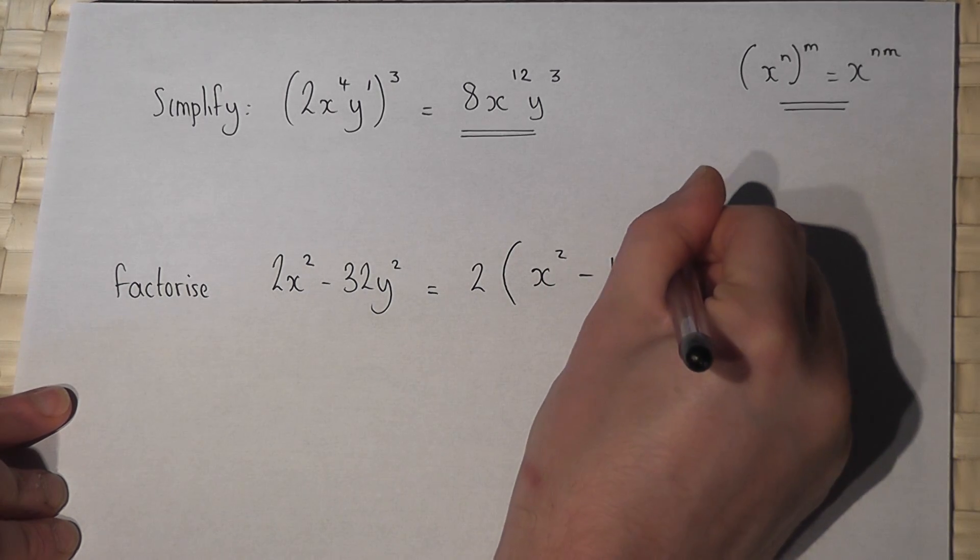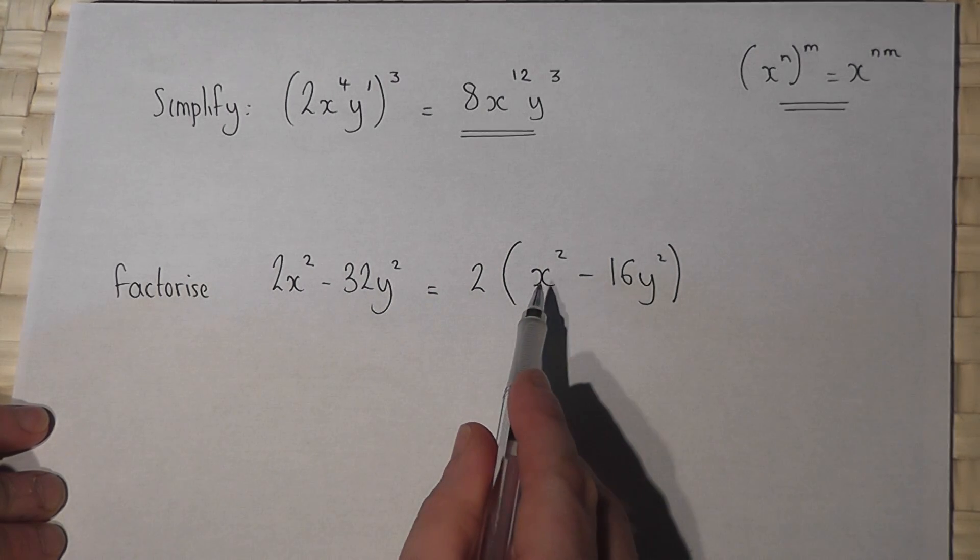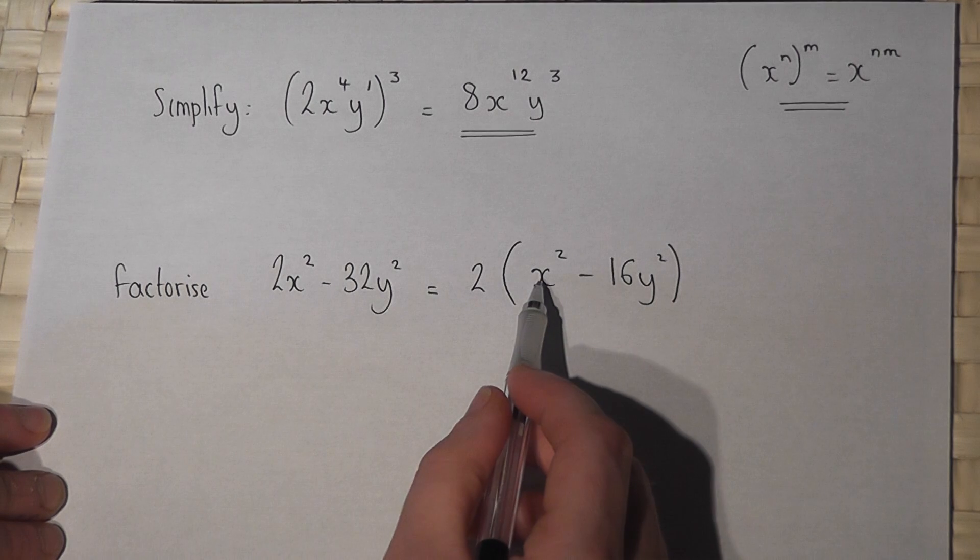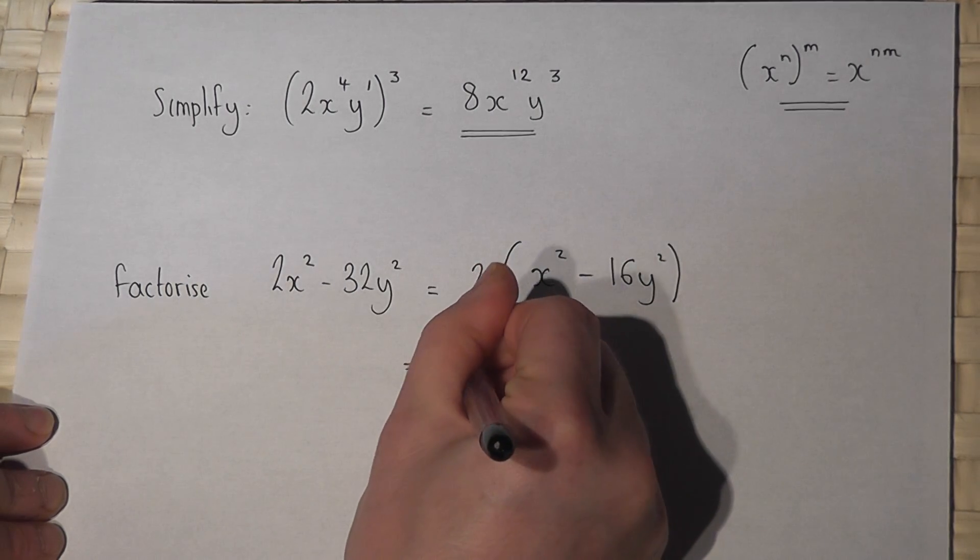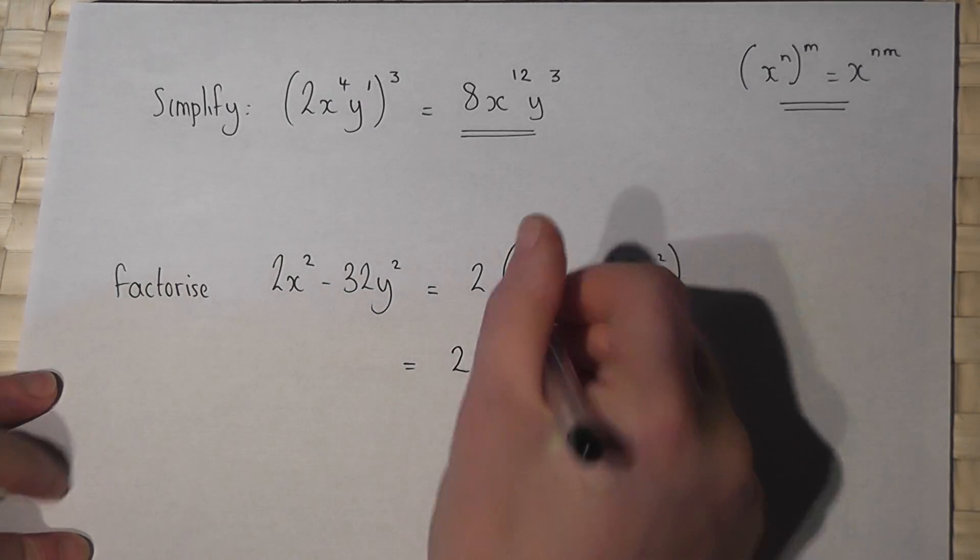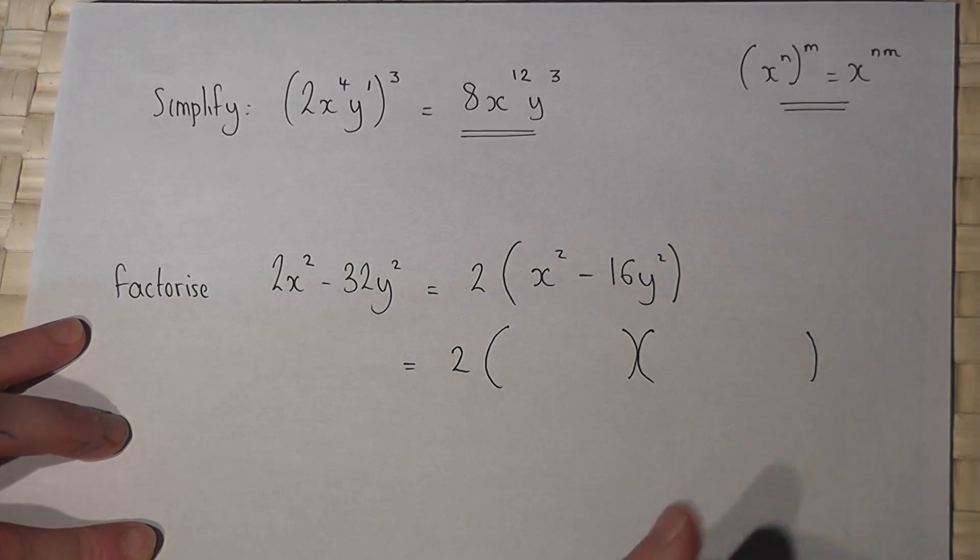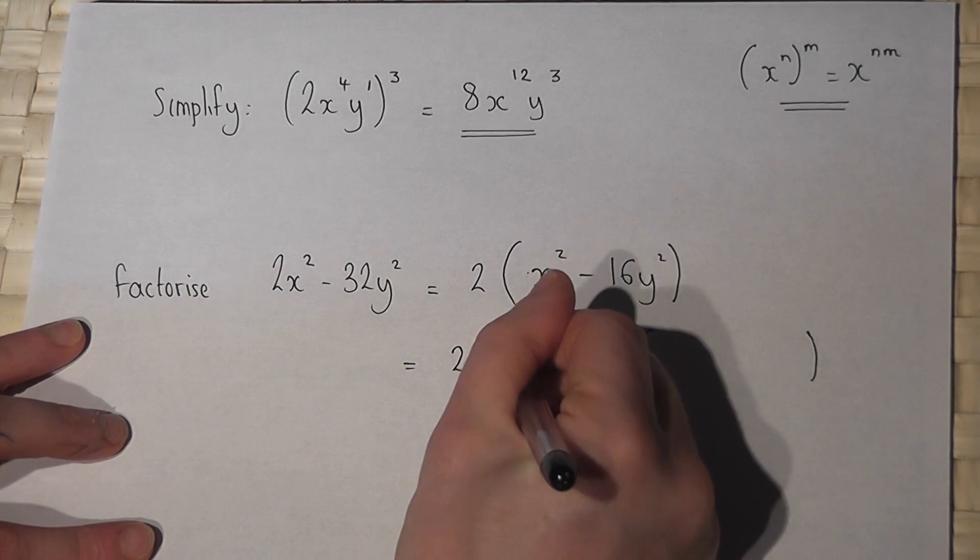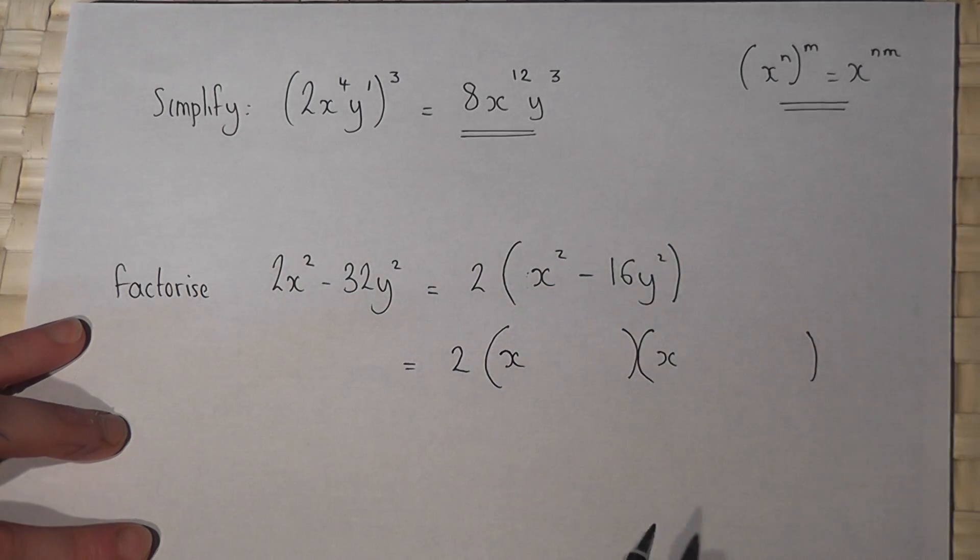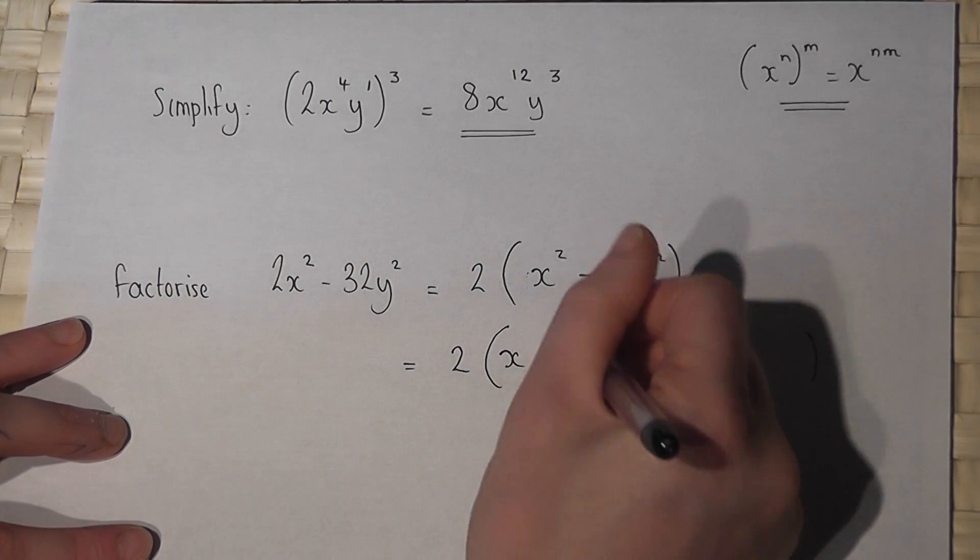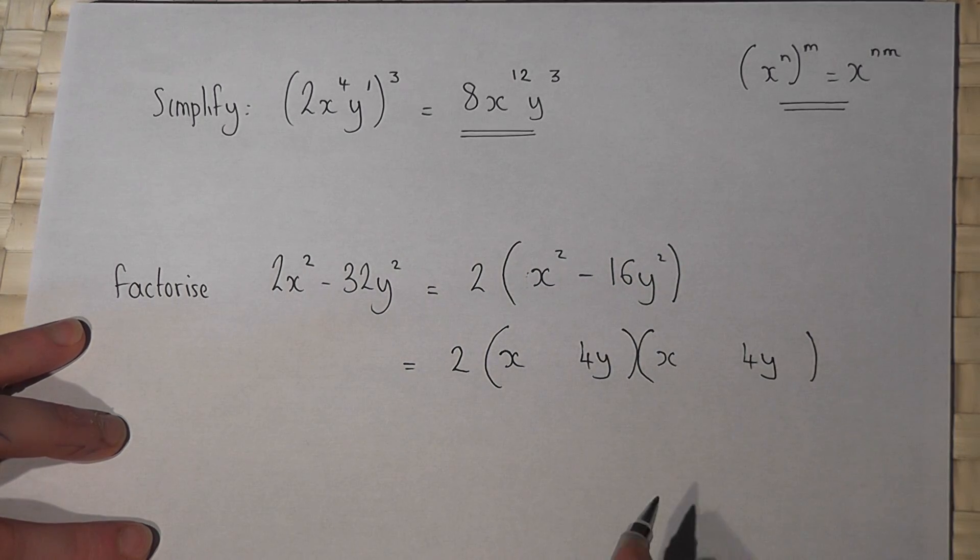Now then this can be factorized further because it's of the form of the difference of two squares. So there's the 2, I can write this as a pair of double brackets. Now x squared I need an x and an x.